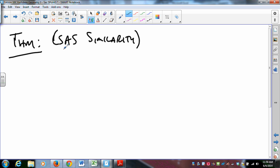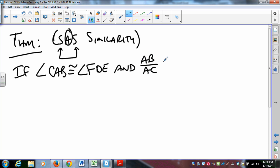Side-angle-side similarity says if I can get this ratio to work and I have that congruent, I'm good to go. If angle CAB is congruent to angle FDE, and the ratio of the sides that come out of angle A is equal to the ratio of the sides that come out of angle D, then triangle ABC is congruent to triangle DEF.